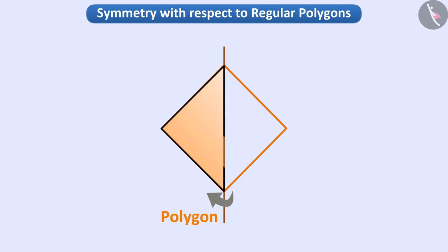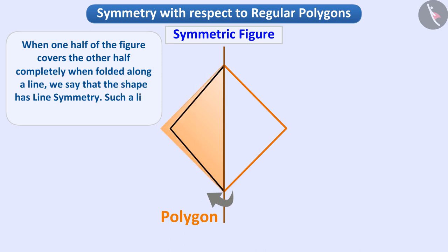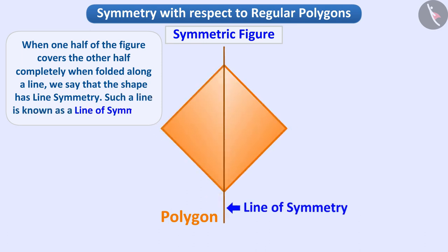In such a situation, we say that the shape is symmetric. When one half of the figure covers the other half completely when folded along a line, we say that the shape has line symmetry. Such a line is known as a line of symmetry.